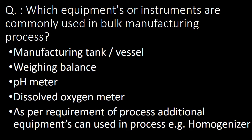Next question: which equipment or instruments are commonly used in batch manufacturing process? A manufacturing tank or manufacturing vessel is used for the manufacturing process. Along with it, a weighing balance, pH meter, and dissolved oxygen meter are used as per the requirement of the process. Additional equipment such as a homogenizer can also be used.